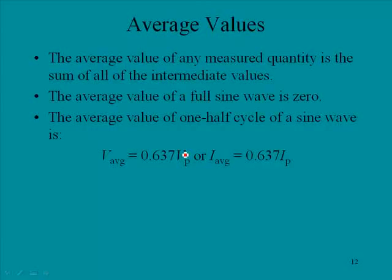Average values. The average value of any measured quantity is the sum of all the intermediate values. The average value of a full sine wave is zero. The average value of one half cycle of a sine wave is, and this is the average of one half.